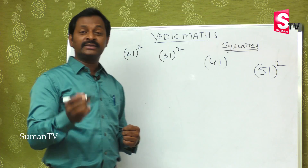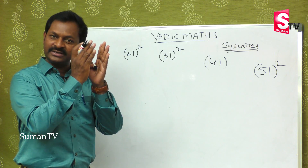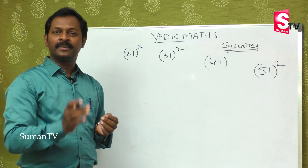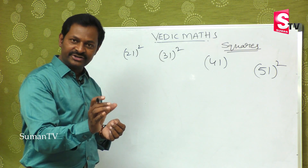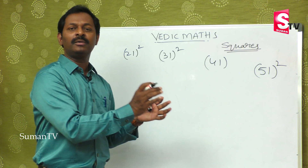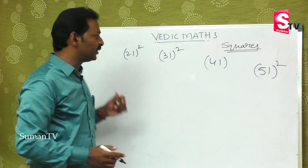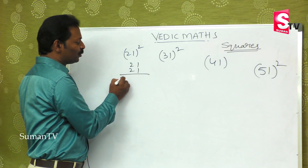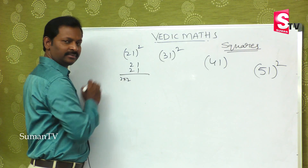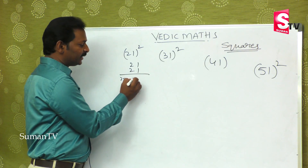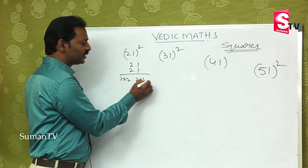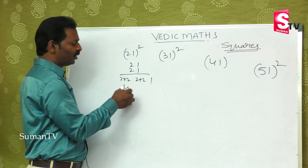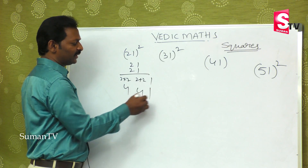For numbers ending in 1, the method changes slightly: first multiply, then add, then place 1 at the end. So for 21 into 21: first multiplication, then addition, then 1. The answer comes out as 441.